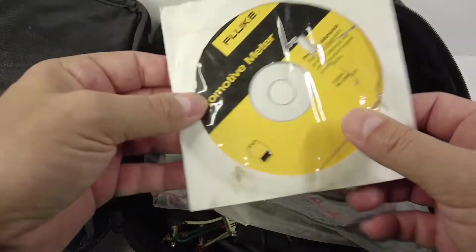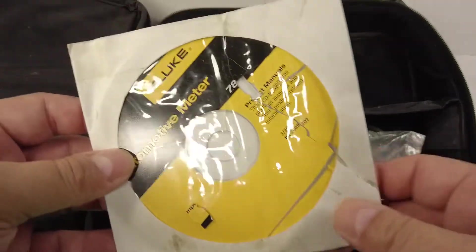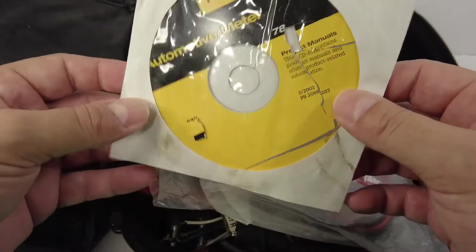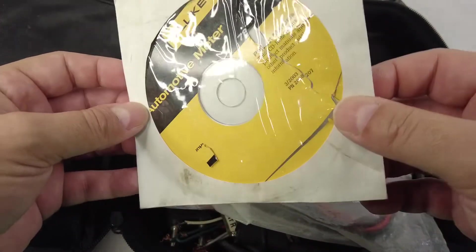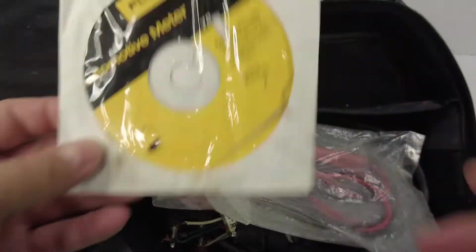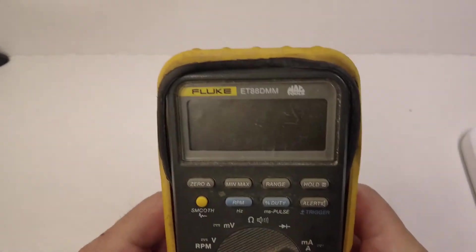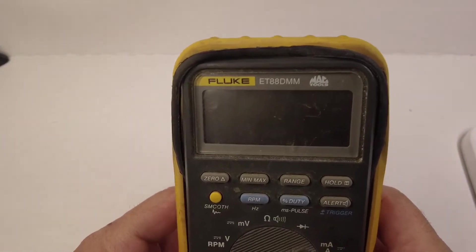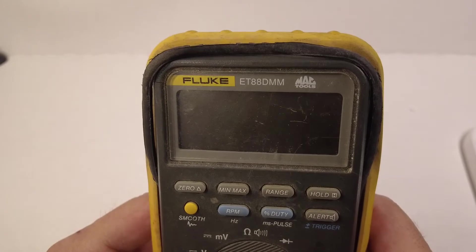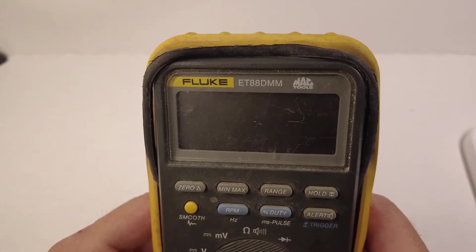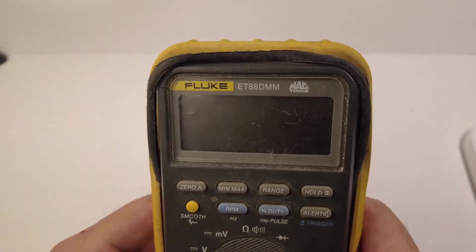You know, sometimes you find a surprise and you get excited because it's all there. But this meter, it's a Fluke, but check it out. It's a Fluke ET DMM. This is a Mac Tools meter.